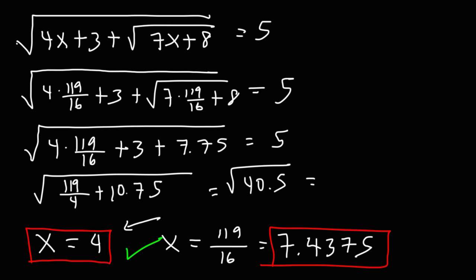The square root of 40.5 is not 5. In fact, it equals 6.36396 with some other numbers, and that doesn't equal 5. So therefore, this solution doesn't work. So we only have one answer for this radical equation. That is x equals 4.